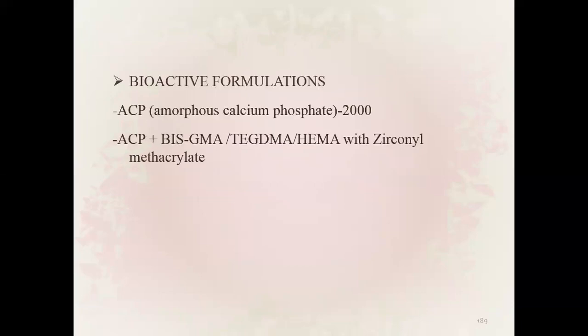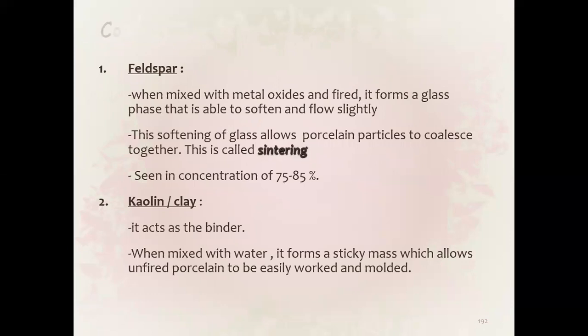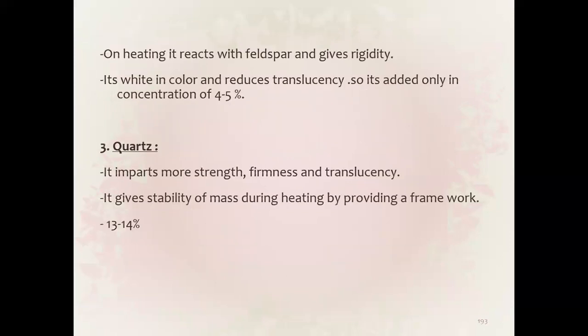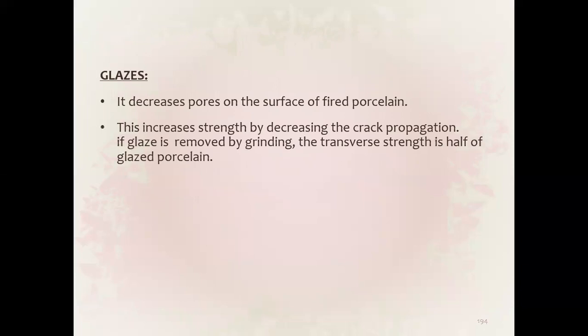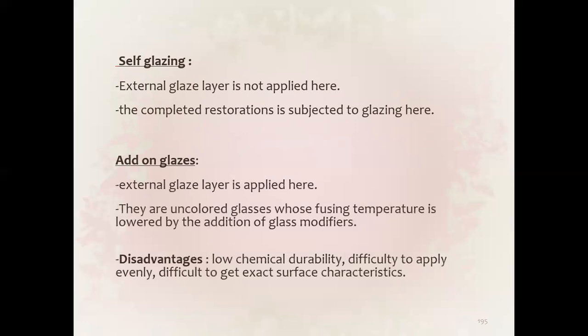Moving on to ceramics. Composition: feldspar 75 to 85 percent, kaolin which acts as a binder at 4 to 5 percent concentration, fluxes which improve strength, firmness, and translucency at 13 to 14 percent, and different glazes. Self-glazing means no external glaze is applied; add-on glazes mean external glaze is applied.